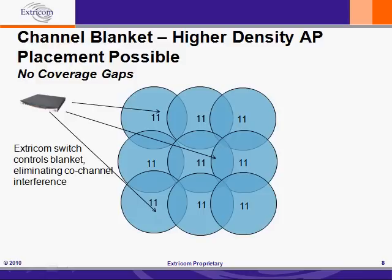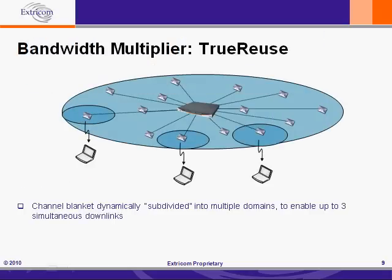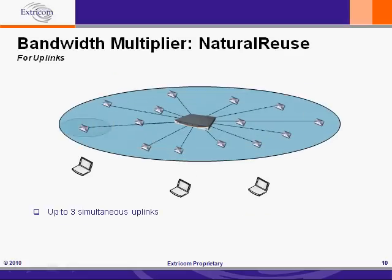And it gets even better. Extracom has patented technology called TrueReuse, which enables up to three simultaneous downlinks on a channel blanket. What TrueReuse does is actually triple the downlink capacity of a single channel. In many of today's web-based applications, downlink capacity is of primary importance because users download a lot more data than they upload. Nevertheless, Extracom has also addressed uplink capacity with a feature called NaturalReuse, which enables up to three simultaneous uplinks on a single channel blanket. So with efficient reuse of just one channel, Extracom achieves the same uplink and downlink capacity as the three-channel, 9-AP microcell deployment discussed earlier.